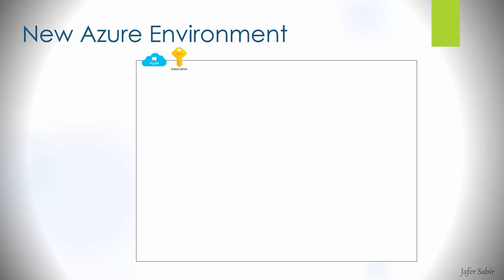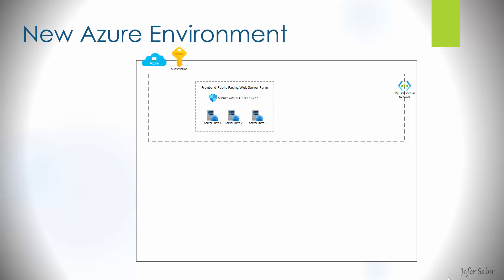We have a new Azure subscription and the first thing we need to do is create a virtual network. VNets can also be created as part of creating a resource — for example when creating a virtual machine, you can create a VNet from within the networking tab. We've decided that new public-facing services are going to be deployed into Azure, so we throw some public-facing web servers in and put them in our VNet.